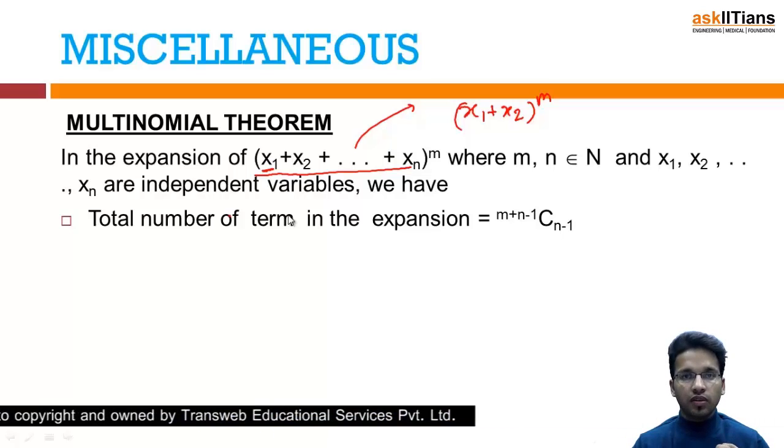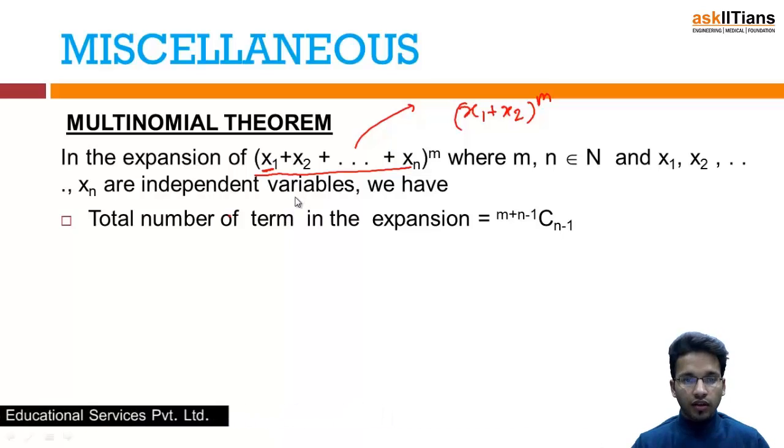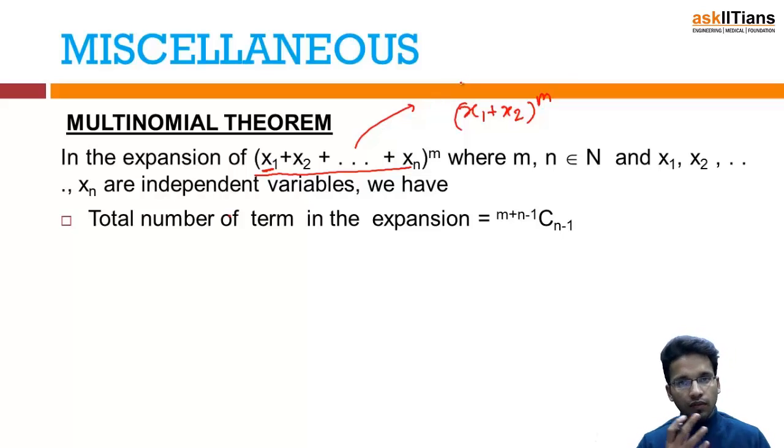So here basically what we are doing, even in the binomial... Now going to that thing which I promised you in the beginning, that we will be going in more deep about the binomial coefficients. So basically what is happening is that we are distributing this power m over two things. In that case, what was happening when I am distributing the power over two things, the sum of the power was always m.